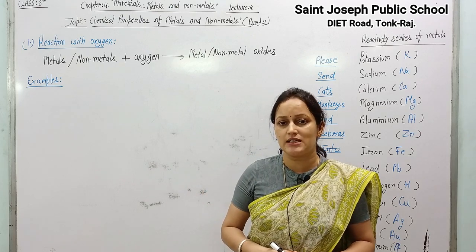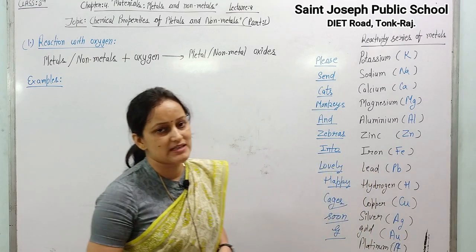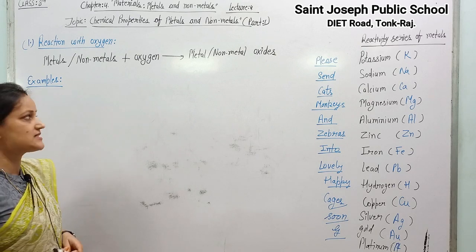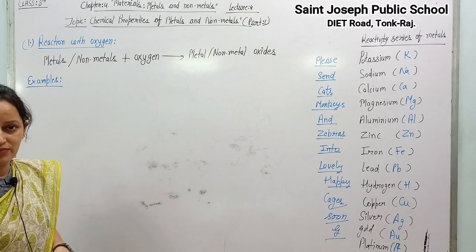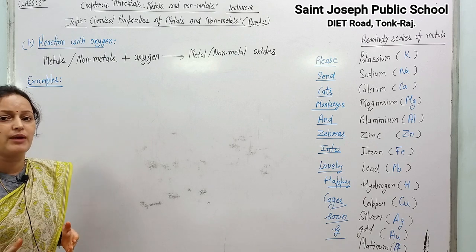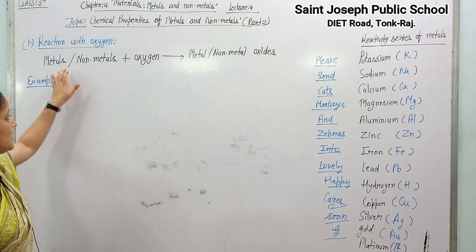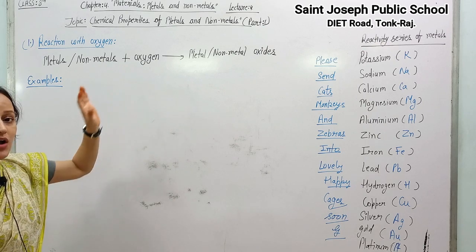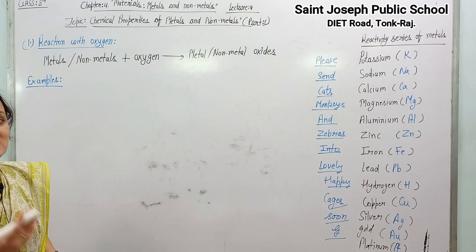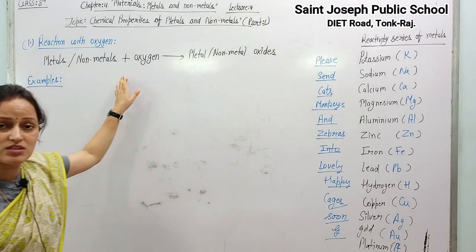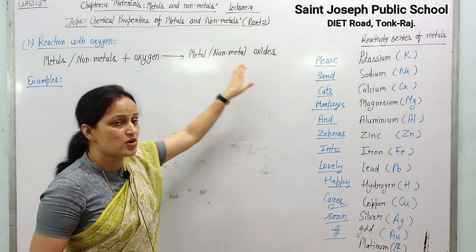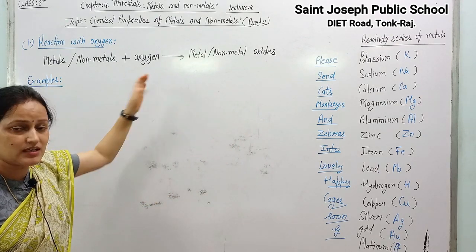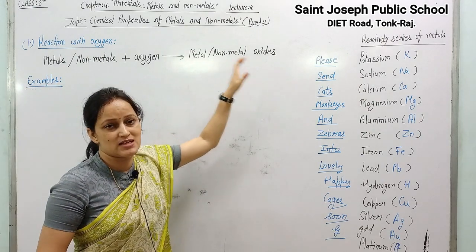One by one we will study chemical properties of metals and non-metals with different substances, and first of all we are starting with reaction with oxygen. How do metals and non-metals react with oxygen? When metals and non-metals react with oxygen gas, they always form their oxides — metal oxides and non-metal oxides respectively.